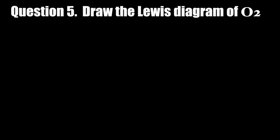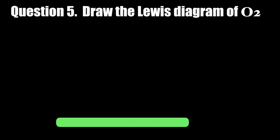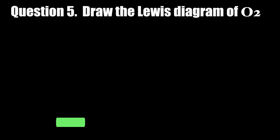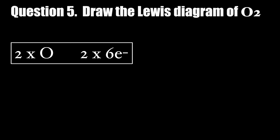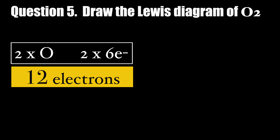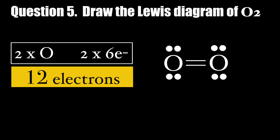Finally, Question 5: Draw the Lewis diagram of O2. O2 has 12 valence electrons. To satisfy the octet rule, a double bond is formed between the two oxygens.